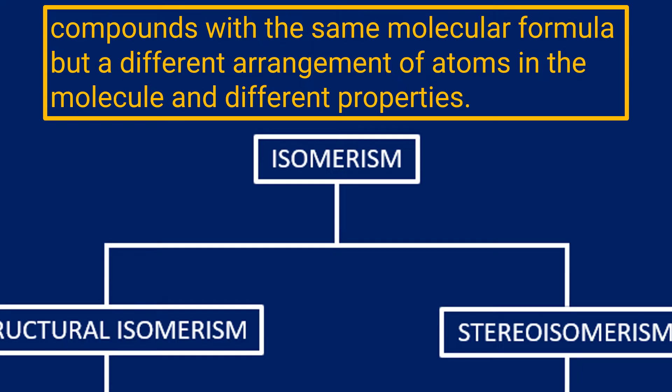First off, the definition for an isomer: an isomer is compounds that have the same molecular formula—in other words, the same number and type of atoms—however, they are arranged differently, and that gives the molecules different properties.